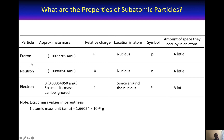The neutron has a mass of 1.0086650 AMU — AMU stands for atomic mass unit, meaning compared to something. For simplicity, we say the mass of a neutron is about 1. Neutrons have no charge, so they have a relative charge of 0. Neutrons are found in the nucleus, and we use lowercase n as their symbol. Since neutrons are in the nucleus, they only take up a little bit of space.